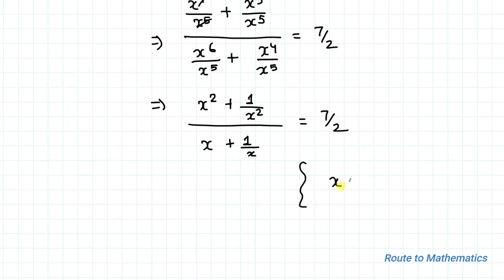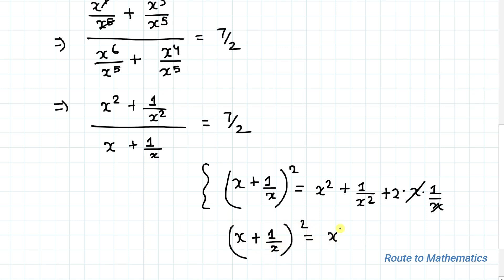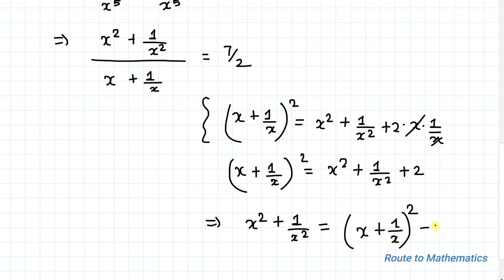Now, squaring x plus 1 by x using the algebraic identity (a + b) whole square, we get x squared plus 1 by x squared plus 2 times x times 1 by x. The x's cancel out, so x plus 1 by x, whole squared, equals x squared plus 1 by x squared plus 2. Taking 2 to the right hand side, x squared plus 1 by x squared equals x plus 1 by x, whole squared, minus 2.